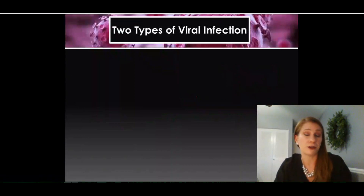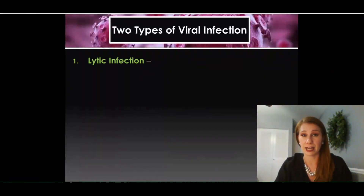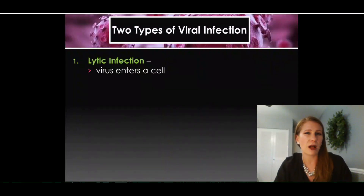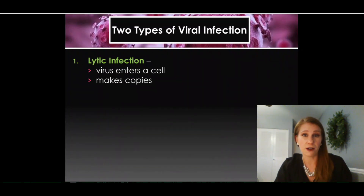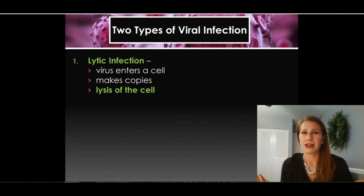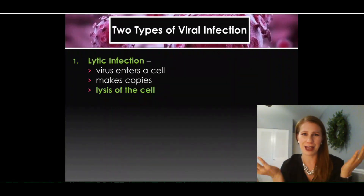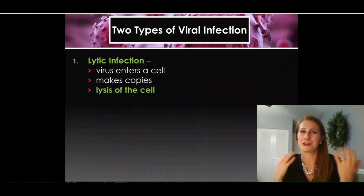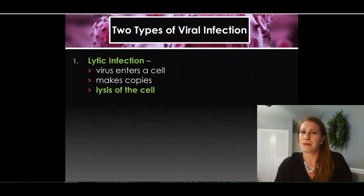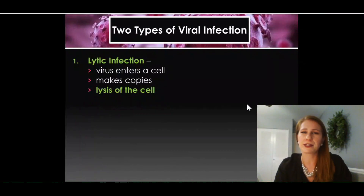There are two types of viral infection. The first one is lytic infections. Lytic infections happen just like we outlined in the last video: the virus enters the cell, it makes copies of itself, and then it explodes or bursts out of the cell, which kills your cell. The scientific term for exploding out of a cell is lysis, but exploding is the word I'm going to use.